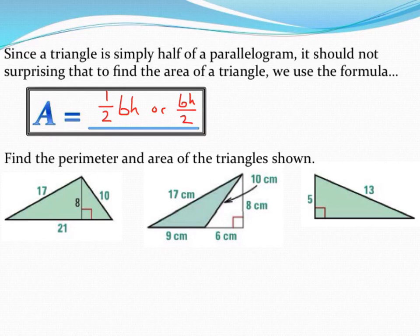When we're working with triangles we're going to use the formula to find area of one half times base times height or some people like to do base times height divided by 2. They're both exactly the same. So basically take your parallelogram formula and divide it in half. So let's go ahead and find the area and perimeter of some triangles down here.